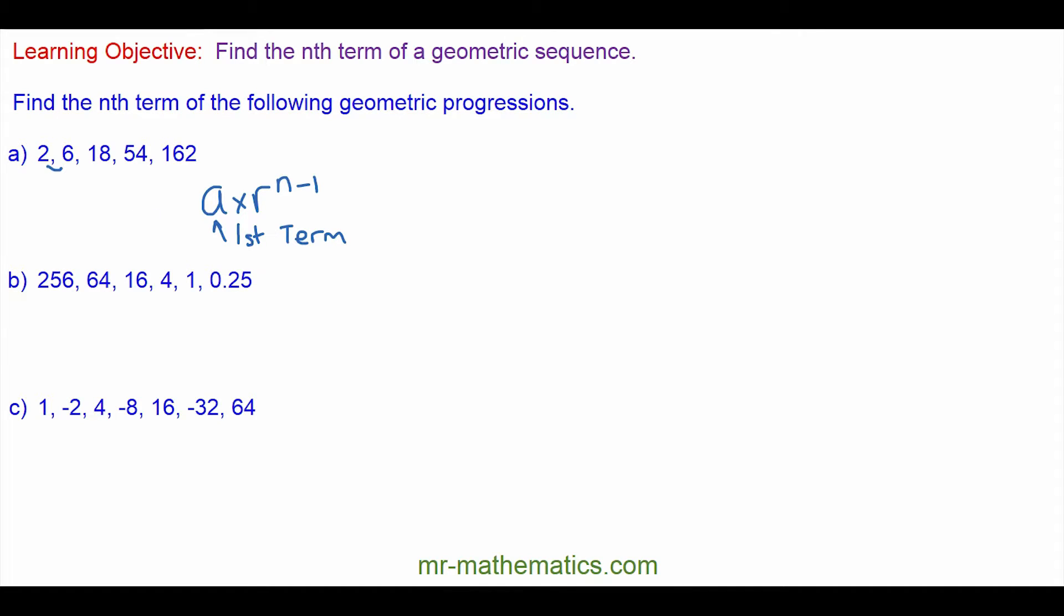In this sequence, a is the first term and r is the common ratio, which is the multiplying factor. It's different from an arithmetic sequence because instead of adding from one term to another, we multiply by the common ratio.